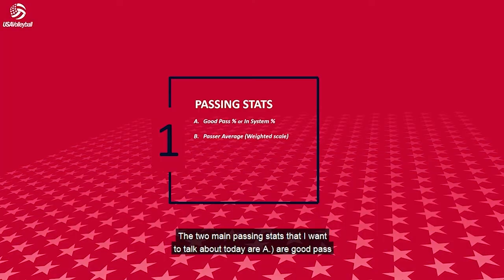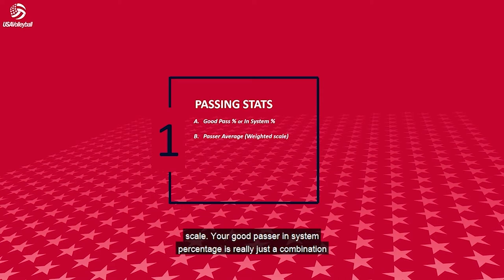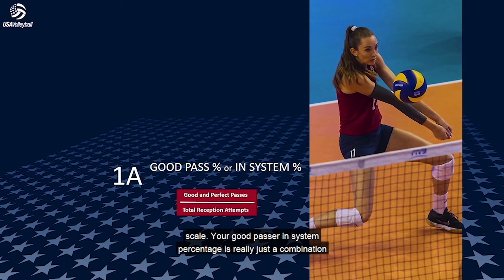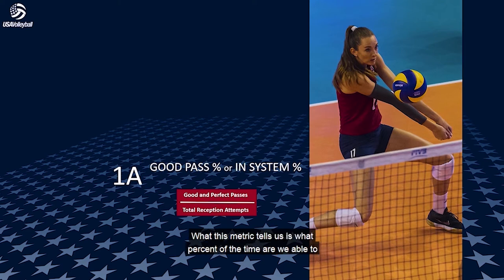The two main passing stats I want to talk about today are: A, our good pass or in-system percentage, and B, our passing average, which is a weighted scale. Your good pass or in-system percentage is really just the combination of all your good and perfect passes divided by your total reception attempts. This metric tells us what percent of the time we are able to execute all of our offensive options on a particular play.